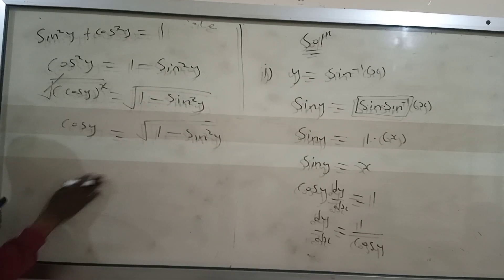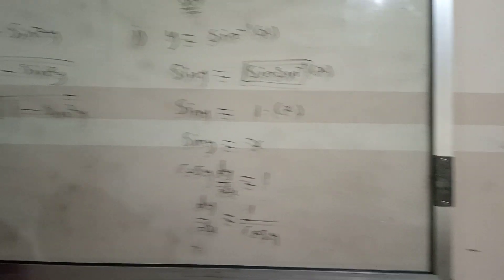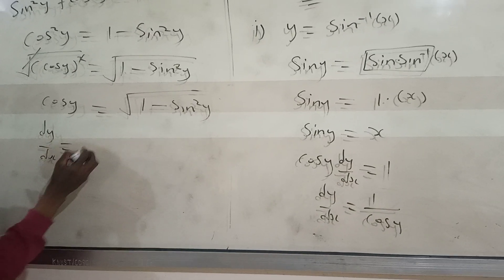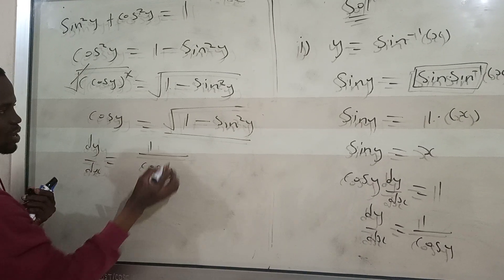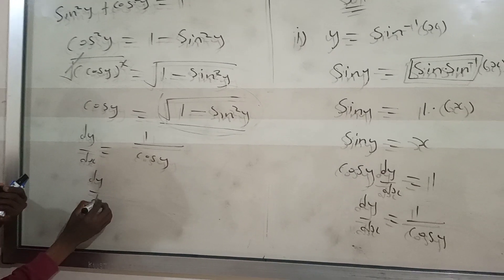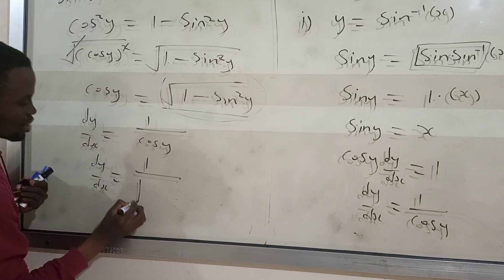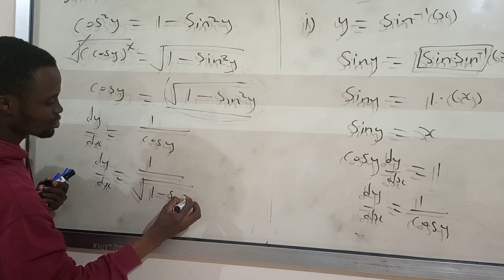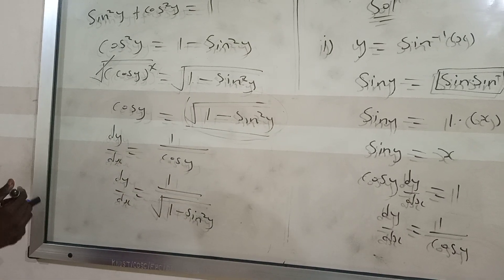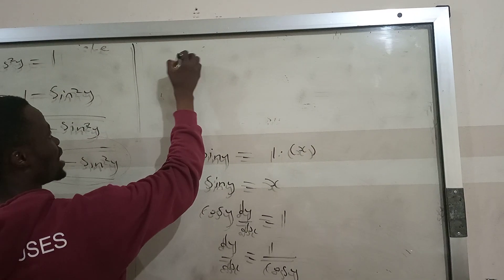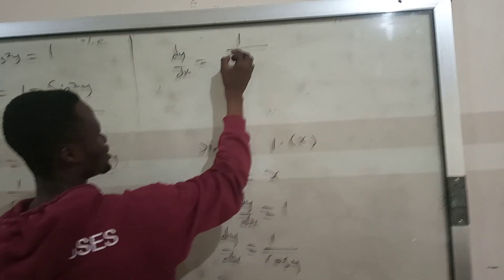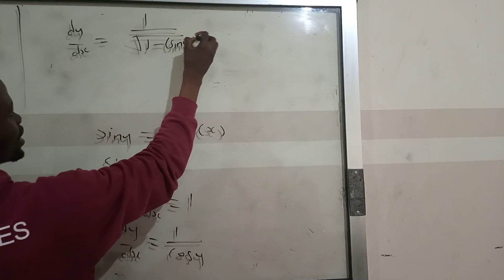So going back to the formula, dy/dx equals 1 over cos y. Our cos y equals the square root of 1 minus sine squared y. We also know that sine y equals sine squared y, where sine y is equivalent to x. So in place of sine y, we substitute x.